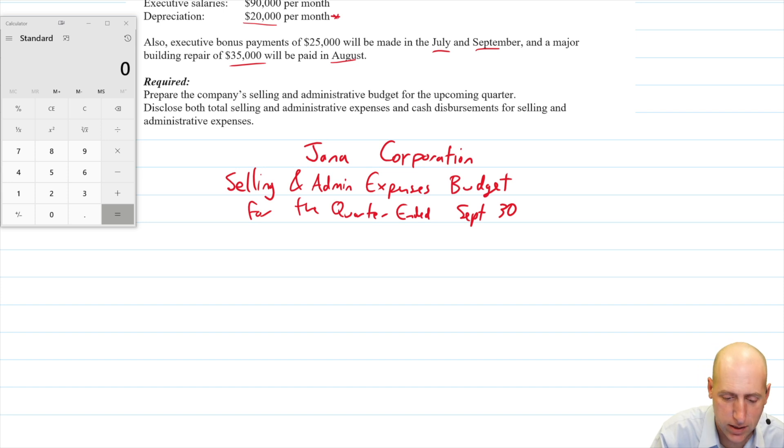And so we have July, August, and September as our three months in this quarter. And our total column, which is for the quarter total. So we're going to start with our variable expenses, then we'll do our fixed.